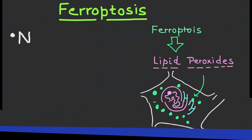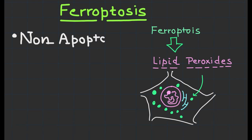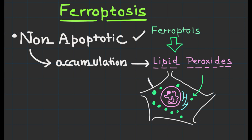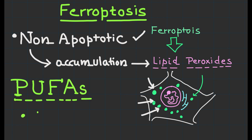Ferroptosis is a non-apoptotic form of cell death characterized by the accumulation of lipid peroxides, particularly polyunsaturated fatty acids called PUFA. It was first described in 2012 as an important pathway in various physiological and pathological contexts. Let's delve deep into the details.